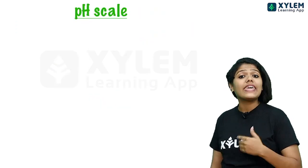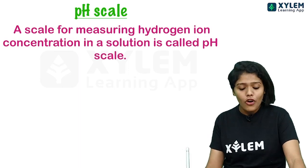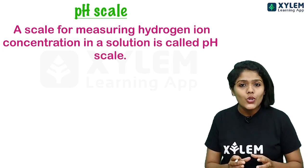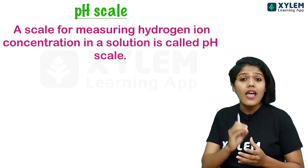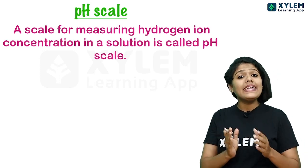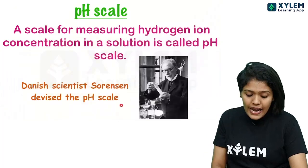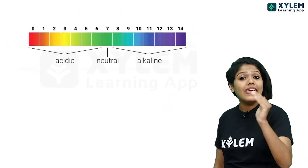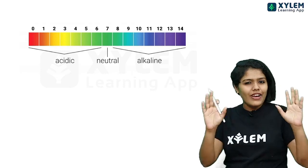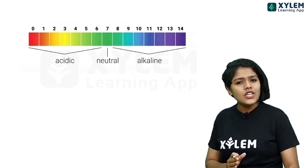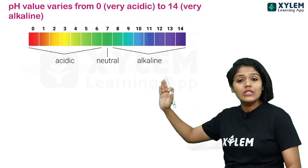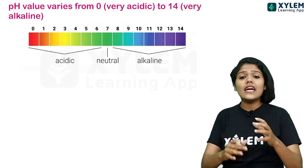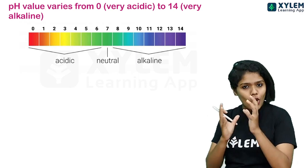Now let's see how we can define a pH scale. A scale for measuring the hydrogen ion concentration in a solution is called the pH scale. It was devised by Danish scientist Soren — he was also a chemist. The pH scale ranges from 0 to 14, with different colors representing different values according to the H⁺ ion concentration.